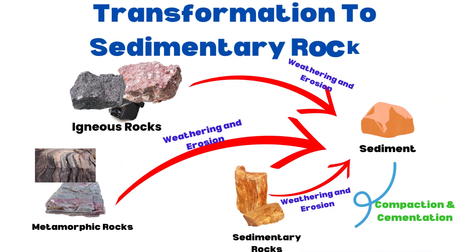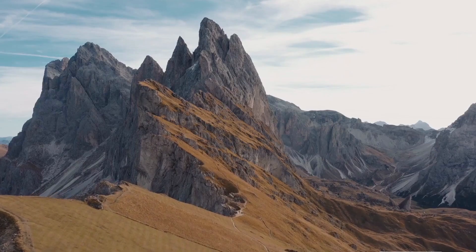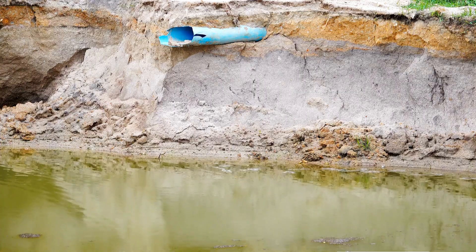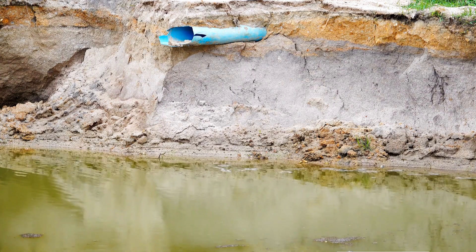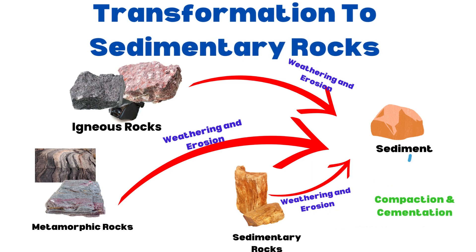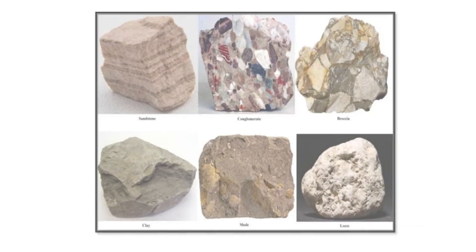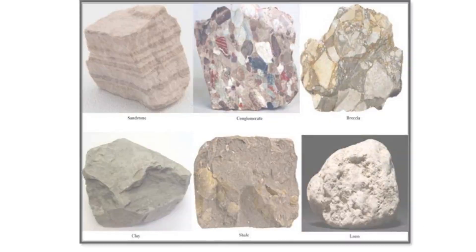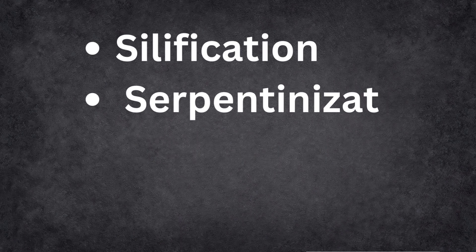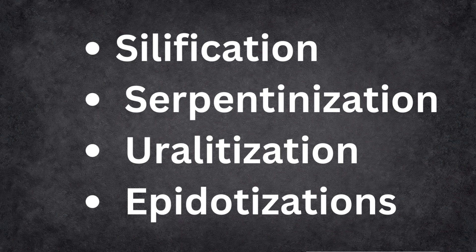Next is the transformation to sedimentary rocks. During mountain building activity, metamorphic and igneous rocks get exposed to processes of weathering and erosion. Eventually they undergo sedimentation. These sediments, when compressed due to pressure from mountains or otherwise, get converted into rocks such as breccia, conglomerate, sandstone, siltstone, and shale. Silicification, serpentinization, uralitization, and epidotization are some of the processes instrumental in the creation of sedimentary rocks.